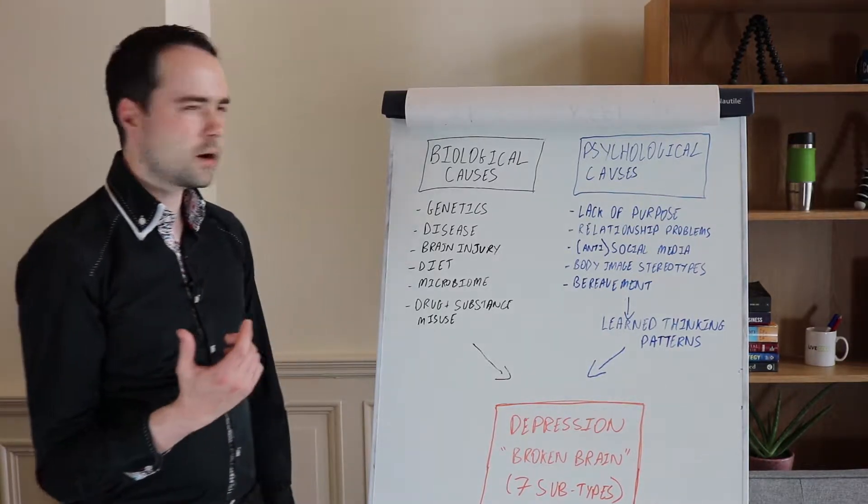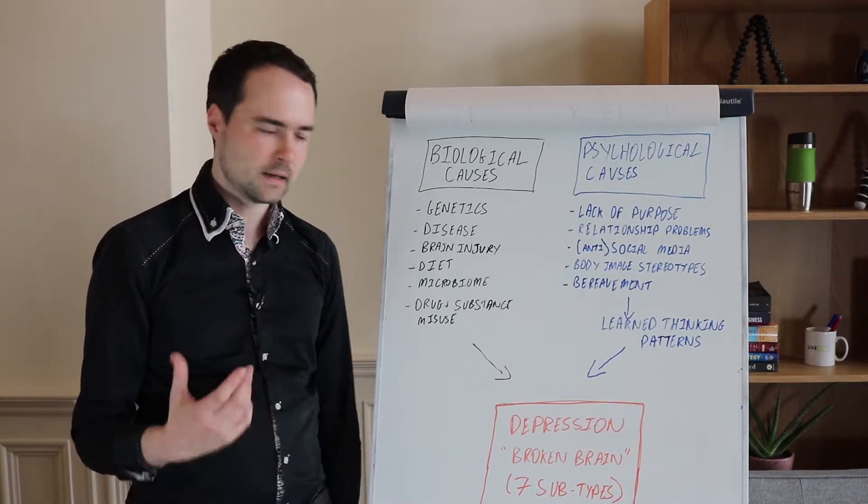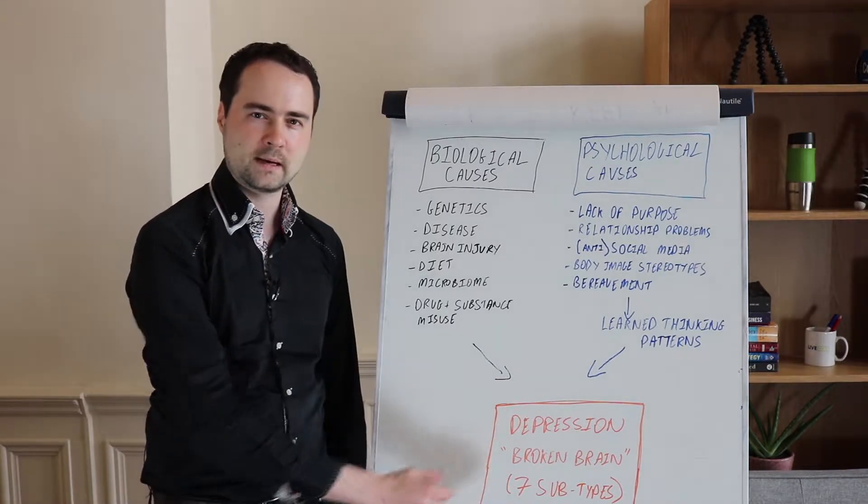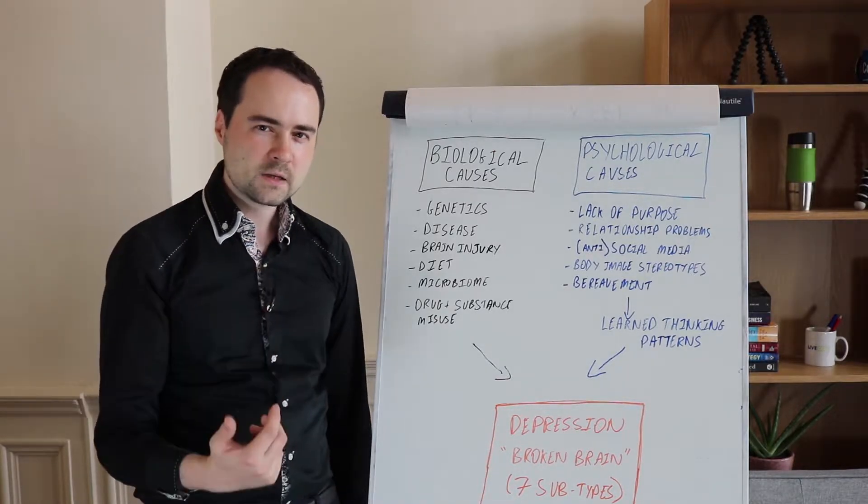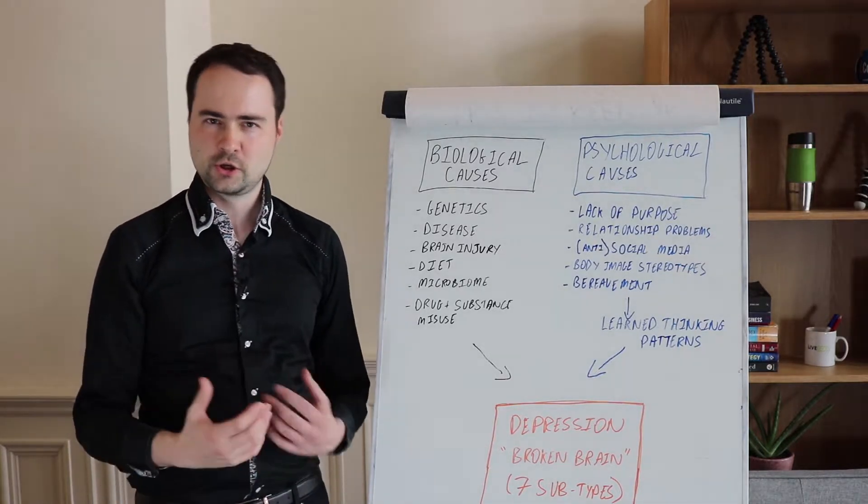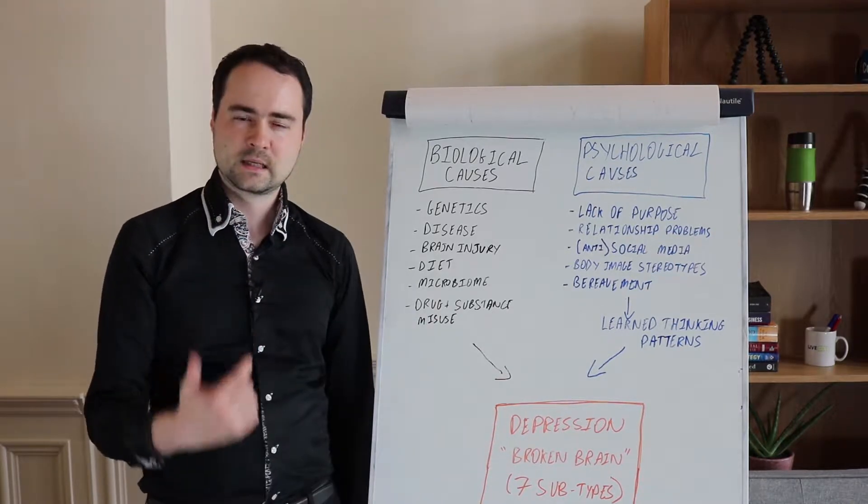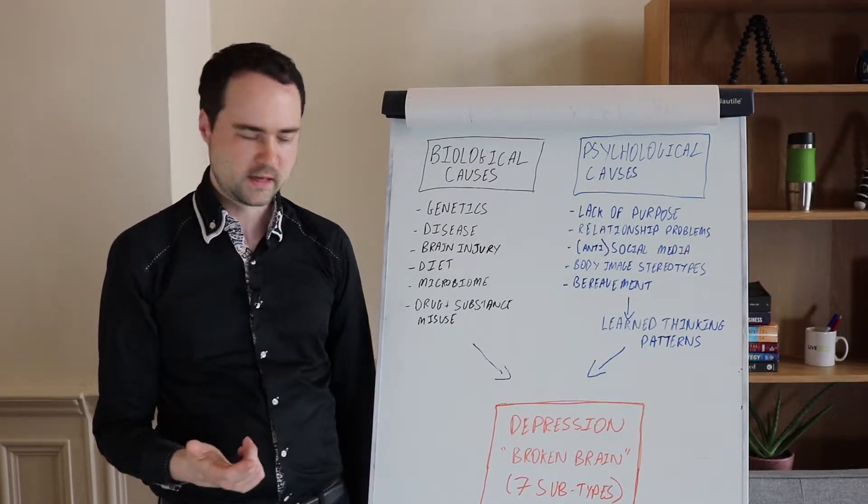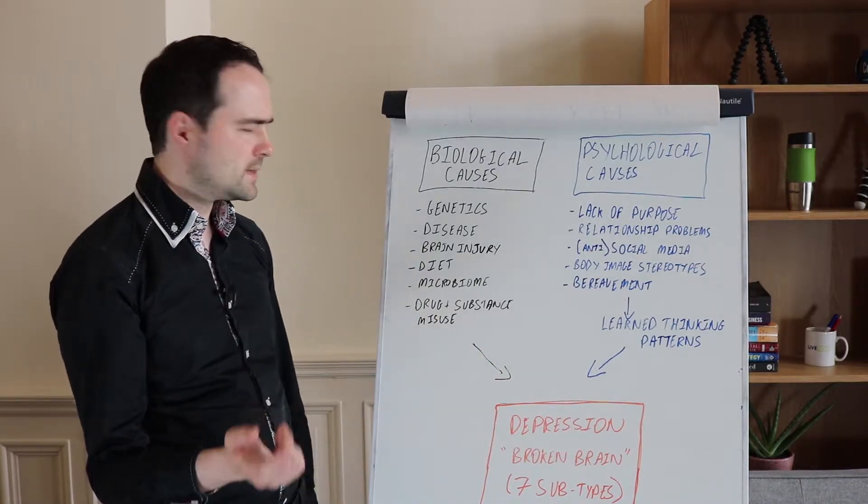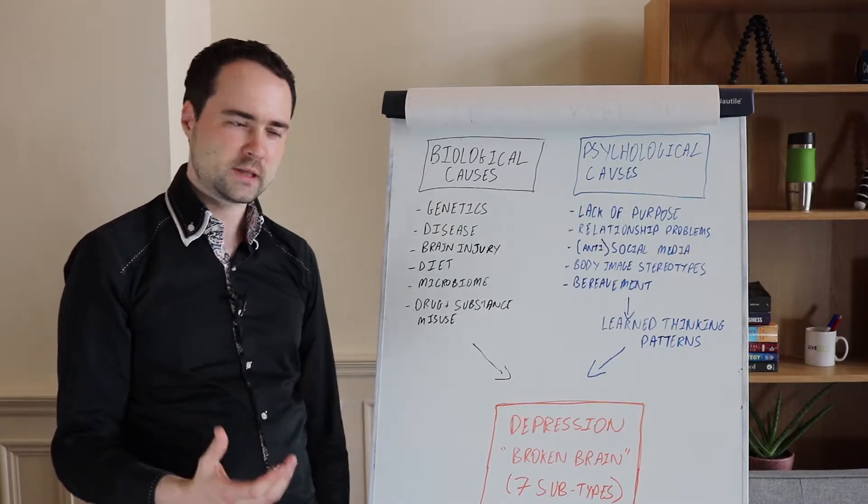So what are these causes? Well, biological causes is really anything that has a physical impact that ultimately ends up causing some sort of problem in the brain. Now whether that is a connectivity problem, whether that is a chemical imbalance, there's a lot of research that goes into that. And these problems can generally be seen on things like SPECT imaging scans and QEEG scans. You get some sort of picture as to what happens when the brain gets broken. And there's a number of things here that we know can contribute to or can cause depression.